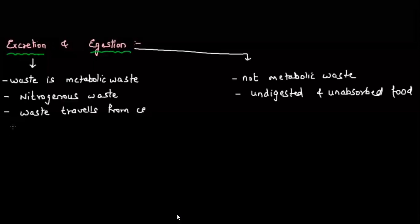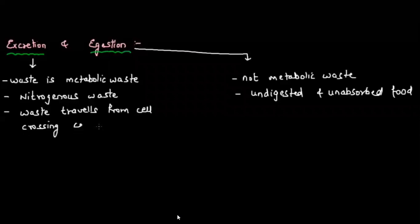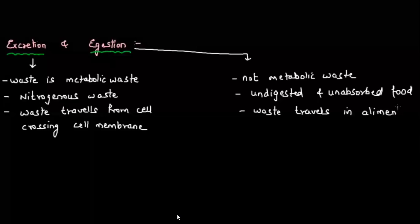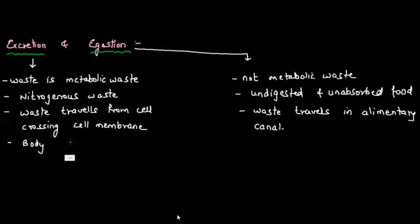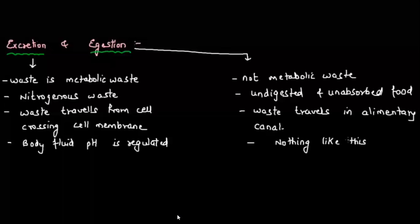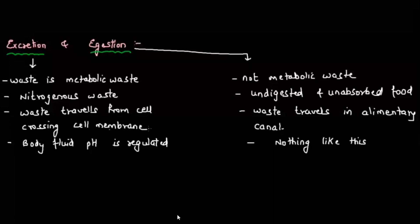Excretion waste travels from cell to cell crossing all the cell membranes, but in ejection waste never travels from cell to cell — it starts from the mouth, and if not absorbed, comes out through the anus, traveling in the alimentary canal. Excretion always regulates body pH, temperature, and fluid concentration, but in ejection there is no such regulation. So excretion is removal of metabolic waste, while ejection is removal of undigested and unabsorbed food.